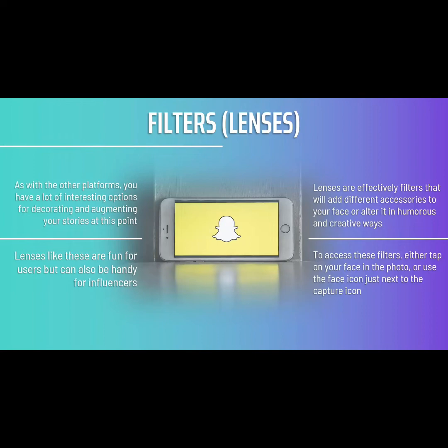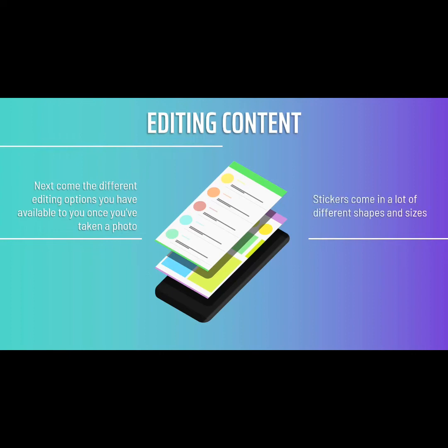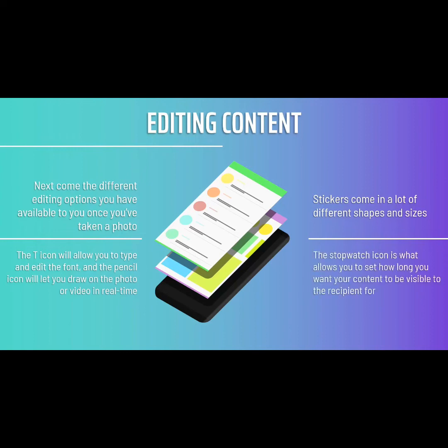To access these filters, either tap on your face in the photo or use the face icon just next to the capture icon. The editing options available after you've taken a photo include stickers, which you can apply around the images — these come in a lot of different shapes and sizes, are updated all the time, and provide a great way to quickly communicate a concept to your viewers. The T icon allows you to type and edit the font, the pencil icon allows you to draw on the photo or video in real time, the scissors icon lets you crop your image to create new stickers from it, and the stopwatch icon allows you to set how long you want your content to be visible to the recipient.